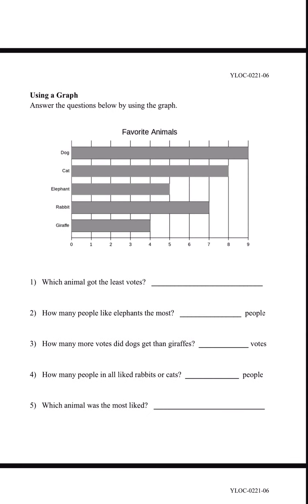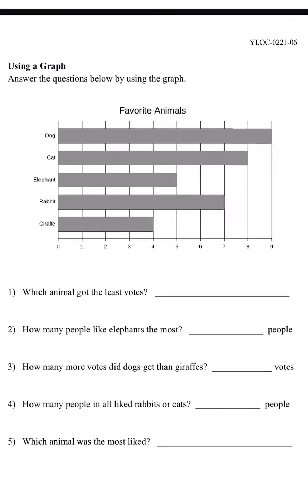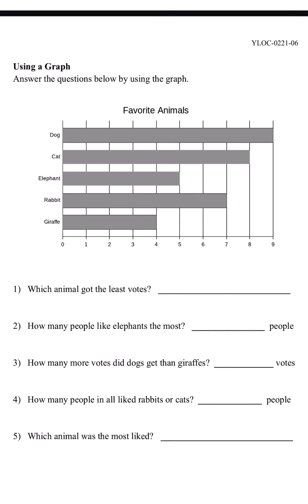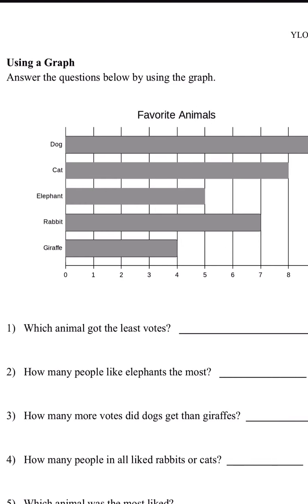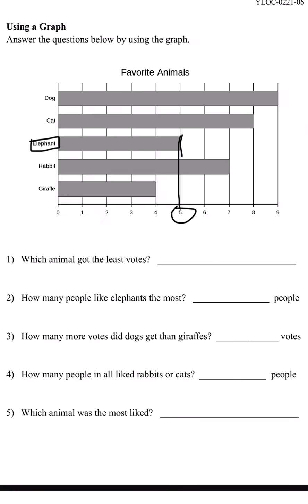Let's move on. We have using a graph. Answer the questions below by using the graph. This graph shows people's favorite animals: dog, cat, elephant, rabbit, and giraffe. We're going to try number 2 first — how many people like elephants the most? Let's look at elephant. The bar ends at 5, which means that 5 people like elephants the most.